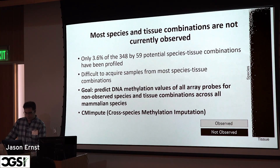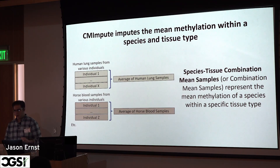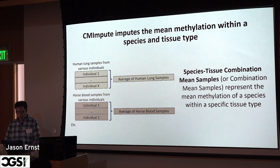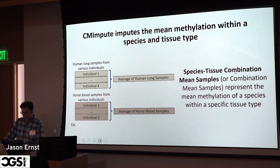We developed an approach called CM-Impute, which stands for cross-species methylation imputation. We focus on one average profile per species-tissue combination — for example, the average of all human lung samples, or horse blood. We refer to these as combination mean samples, representing the mean methylation of a species within a specific tissue type.